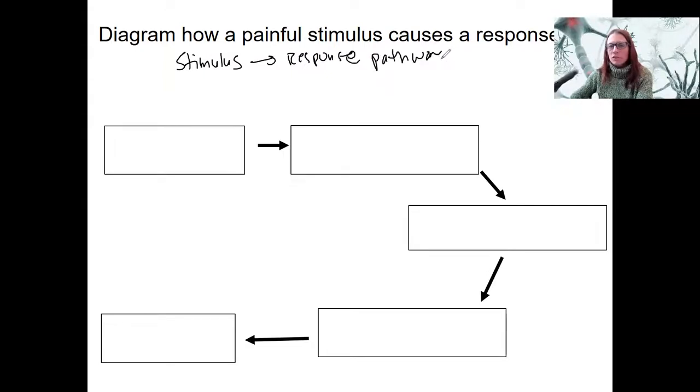There are five components of a stimulus response pathway that you could label here, and then once you have those labeled, you should be able to fill in some gaps of what specifics there are for each. First, we've got the stimulus. Last, we've got the response. In between there, we've got a sensor or receptor, we've got an integrator or control center, and we've got a target or effector.